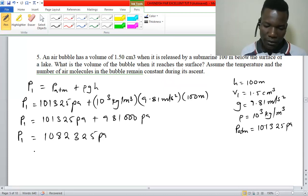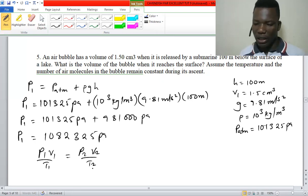We are going to use the general gas equation. Now here we are told that the temperature remains constant, so this equation reduces to P1V1 = P2V2.